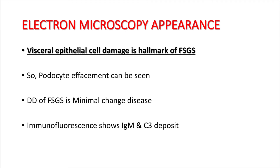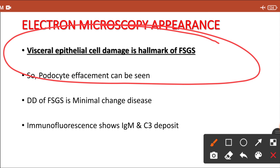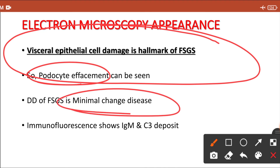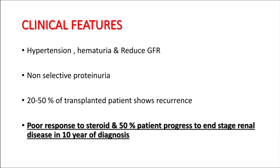In electron microscopy, the main characteristic finding in FSGS is visceral epithelial cell damage, with podocyte effacement visible. This is also seen in minimal change disease, making it the immediate differential diagnosis for focal segmental glomerulosclerosis. In immunofluorescence microscopy, there can be deposition of immunoglobulin and complement C3. Importantly, the deposited immunoglobulin is IgM, not IgG.